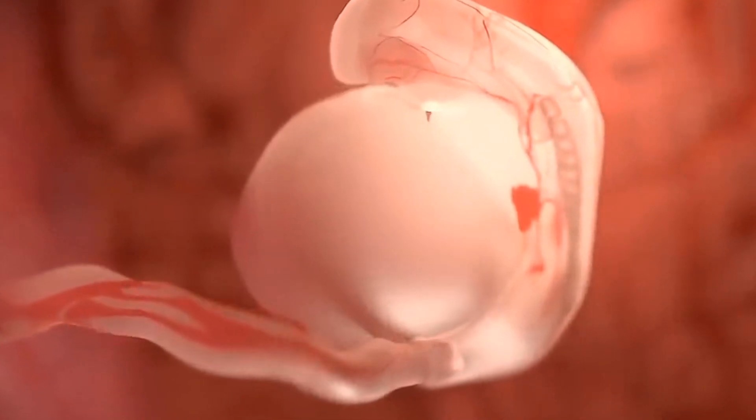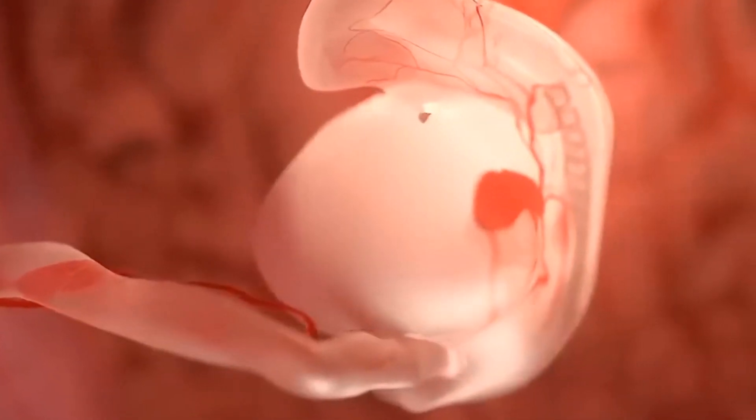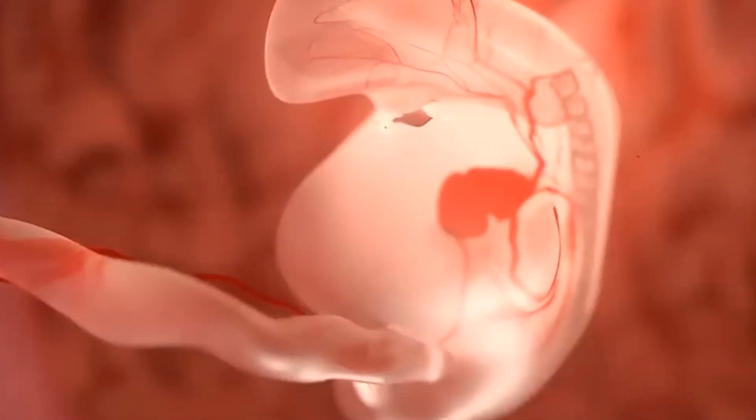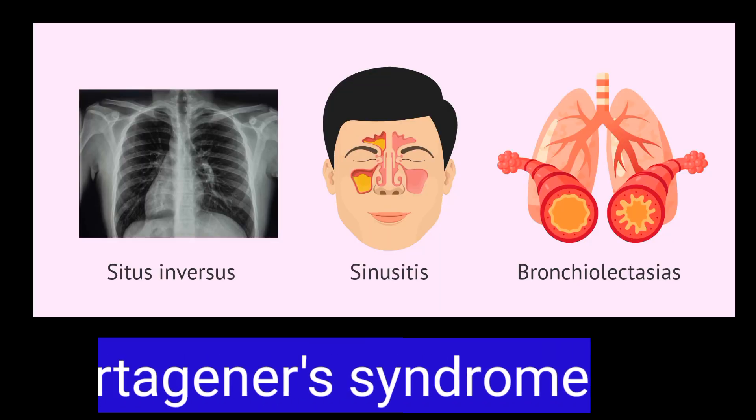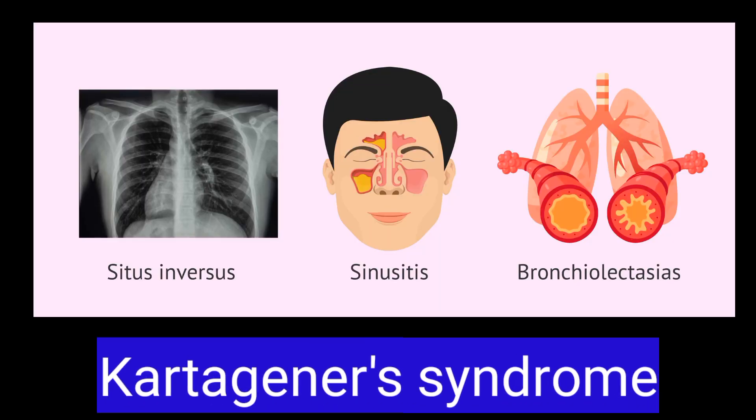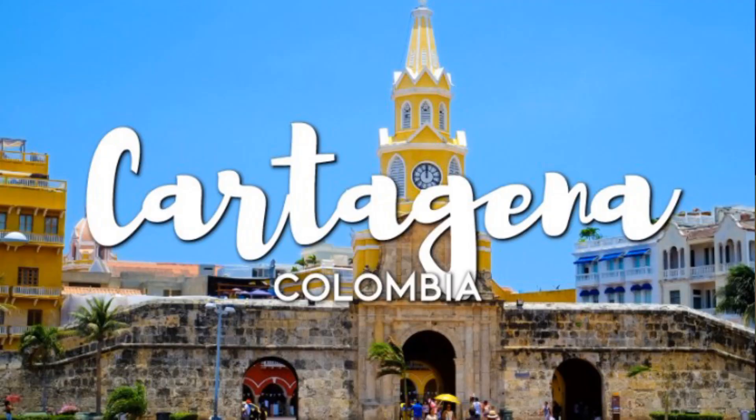During the early weeks of development, a baby's heart may form and sometimes turn to the right for unclear reasons. When this happens, the lungs are also mirrored and the liver, normally on the right, is located on the left. These people often have a problem with their cilia — a condition called Kartagener syndrome.